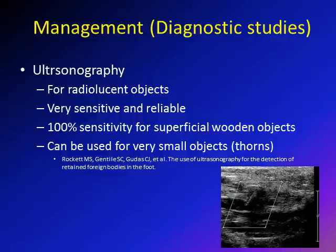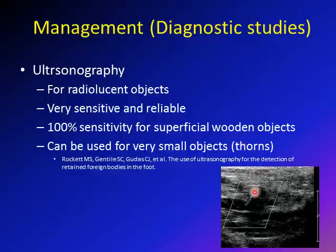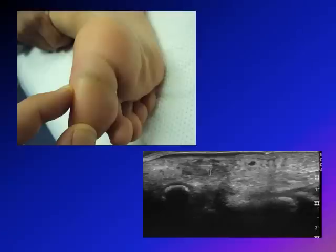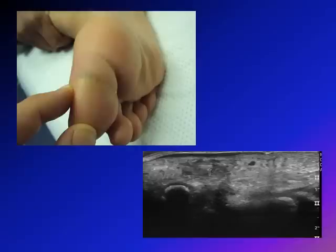Ultrasonography is very useful for radiolucent objects, with high sensitivity and reliability. Studies show approximately 100% sensitivity for superficial wooden objects. It can detect very small objects up to a few millimeters, like thorns. For example, ultrasound identified a 2-millimeter wooden object in the subcutaneous tissue of a patient presenting with redness and swelling, making it especially valuable for wooden foreign bodies and small objects like thorns.